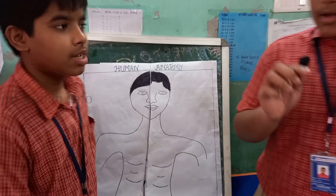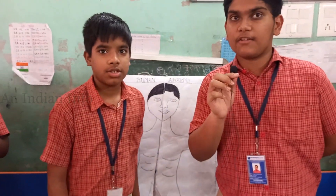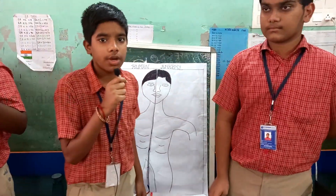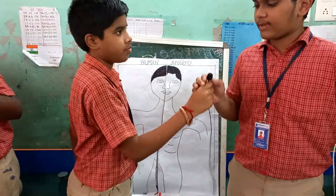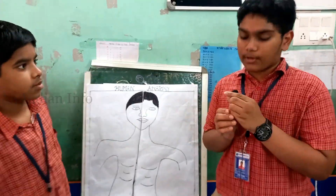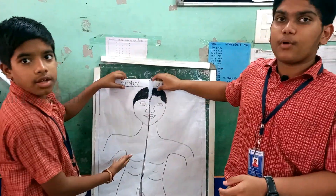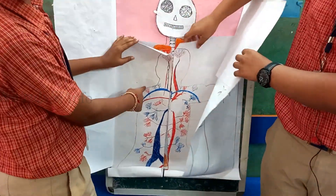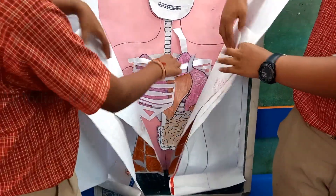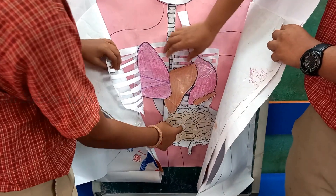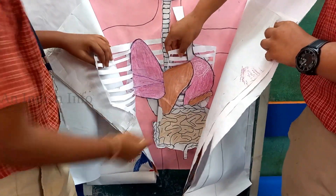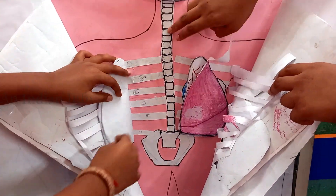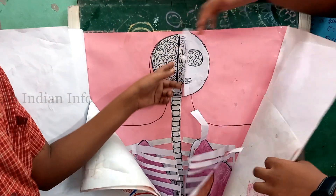Thank you. My name is Vichu, I am studying 6th standard. Today my topic is human anatomy. Inside the body there are arteries and veins, muscles, ribs, digestive system, lungs — lung anatomy, heart — heart anatomy, scalp, and human brain. Thank you.